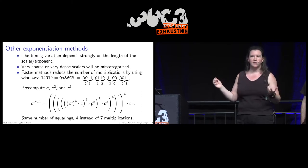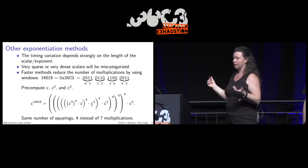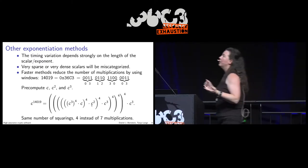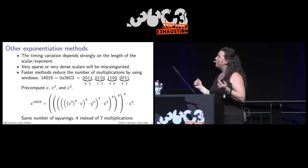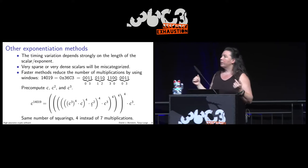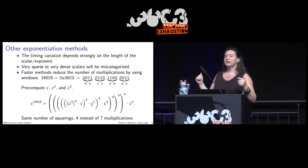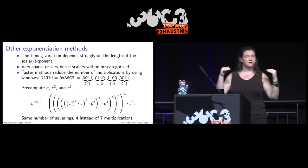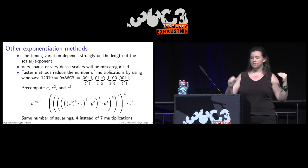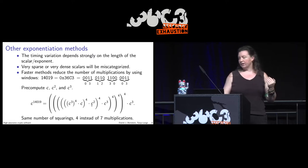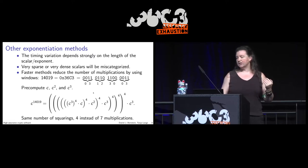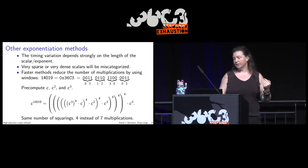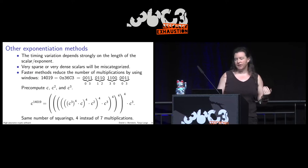This way we do 4 multiplications instead of 7. If there is a sparse integer, it's much faster. We call this technique a 'window'.